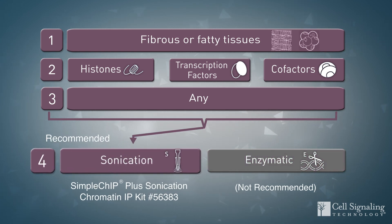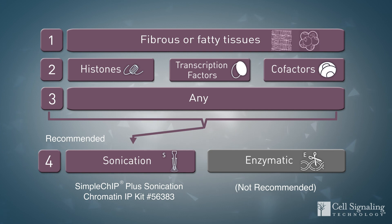For these fibrous or fatty tissues, Cell Signaling Technology recommends using the sonication protocol with the SimpleChIP Plus Sonication Chromatin IP Kit for all target types. Sonication is more effective than enzymatic digestion due to the significant force required to break apart these tissues and lyse their cells and nuclei.